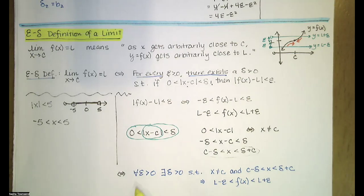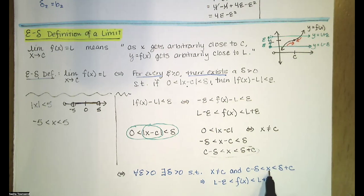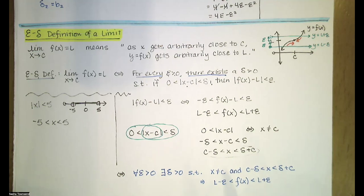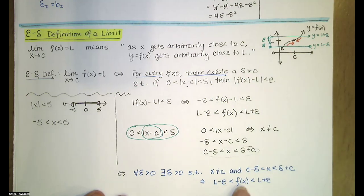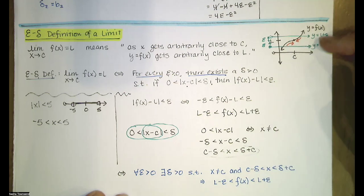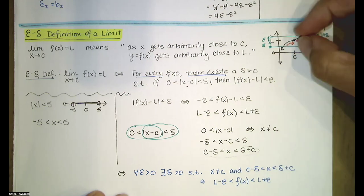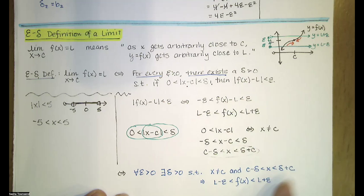In plain English: for every epsilon greater than zero, no matter how small epsilon is, there is a delta greater than zero such that if x is within delta units of c, then the y values are within epsilon units of L. The y values being within epsilon units of L means the y values are between L minus epsilon and L plus epsilon.